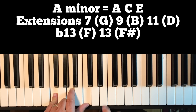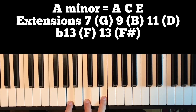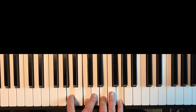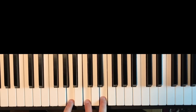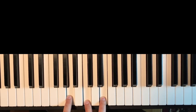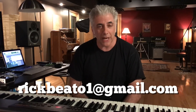The same applies to minor chords. If you have an A minor chord, you get your seventh, ninth, eleventh, and flat six as upper extensions. Anything not part of the triad, whether it's a major or minor chord, is an upper extension. Please subscribe to my Everything Music YouTube channel, and if you're interested in the Beato Book where you can get all this theory, you can write me at rickbeato1@gmail.com. Thanks for watching.